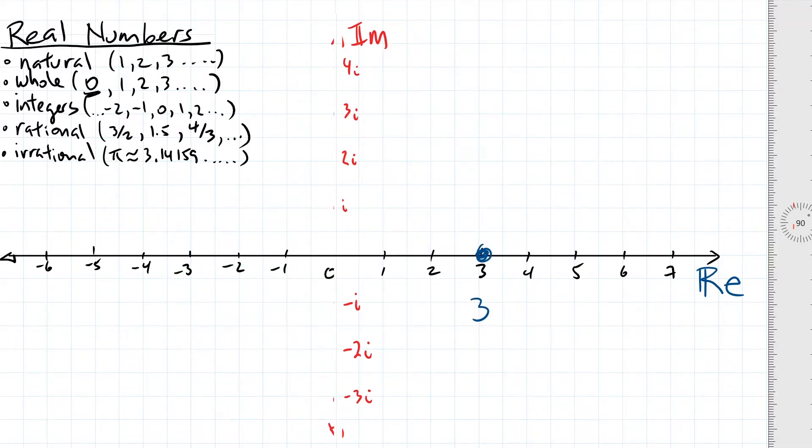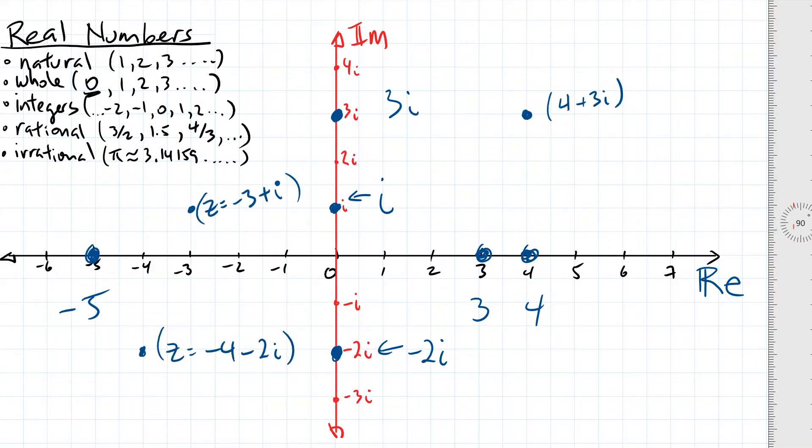So, real numbers such as 3, 4, and negative 5 can be represented by placing them here on this horizontal line. And imaginary numbers such as i, 3i, and negative 2i are placed up and below here in this new vertical line. Now, it is possible for numbers to be partially real and partially imaginary. Like this one over here. Or this one. Or this one. But we'll just stick to one example floating right over here.